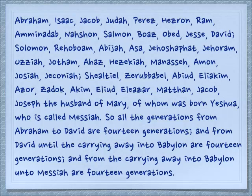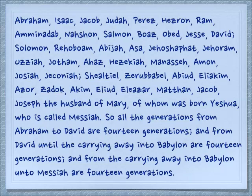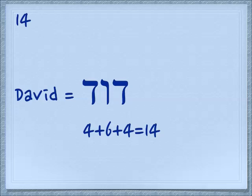However, from Shealtiel to Yeshua is only 13, so you have to count Jeconiah twice — once at the end of the list and once at the beginning. And if you really track the genealogy, you'll see that a few people are missing, at least between Jehoram and Uzziah — there's an Ahaziah, Atalia (maybe you don't want to count her, she was too wicked), a Joash, and Amaziah — they're not listed. So it seems like somebody made a deliberate statement. When we look at the name David, we have two Dalets with a Vav in the middle, and his name adds up to 14. The author was deliberately stating that Yeshua is of the family of David.